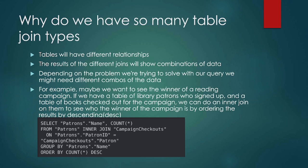Let's look at an example using a reading campaign, continuing with the books example. We might have a table of library patrons who signed up for the campaign and a table of books checked out from the campaign, then do an inner join to see the winner by ordering results descending. The specific query would select patrons dot name from the patrons table, and do an inner join of campaign checkouts on patrons dot patron ID equal to campaign checkouts dot patron.